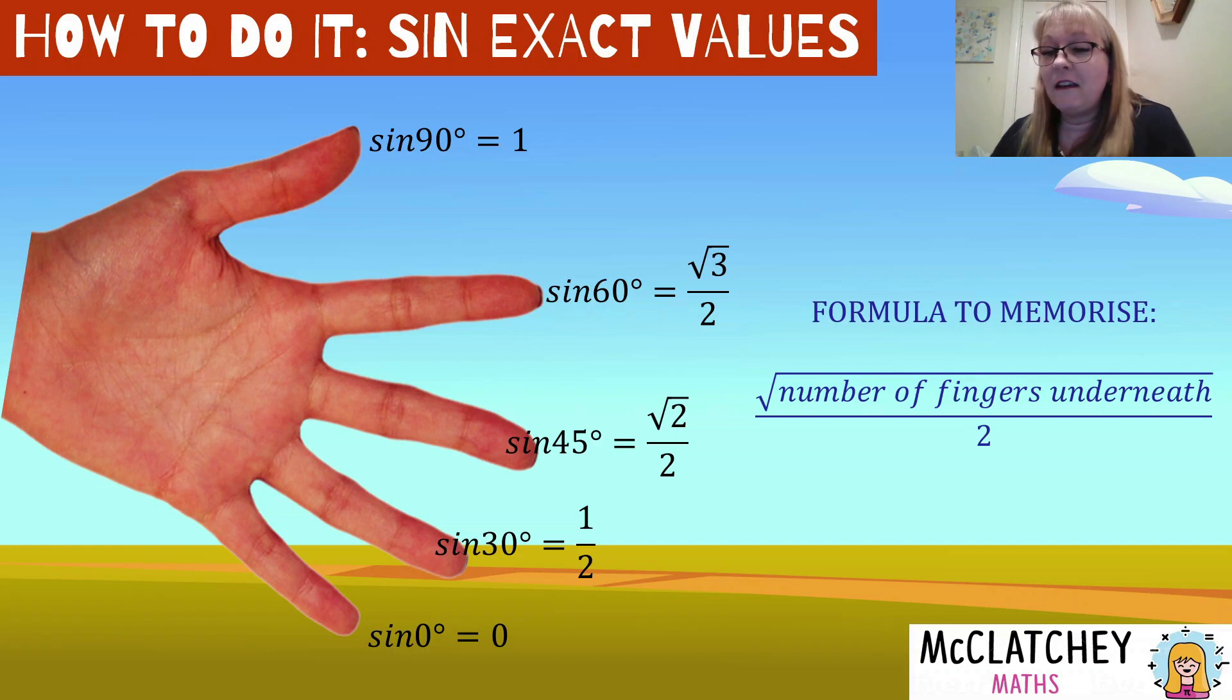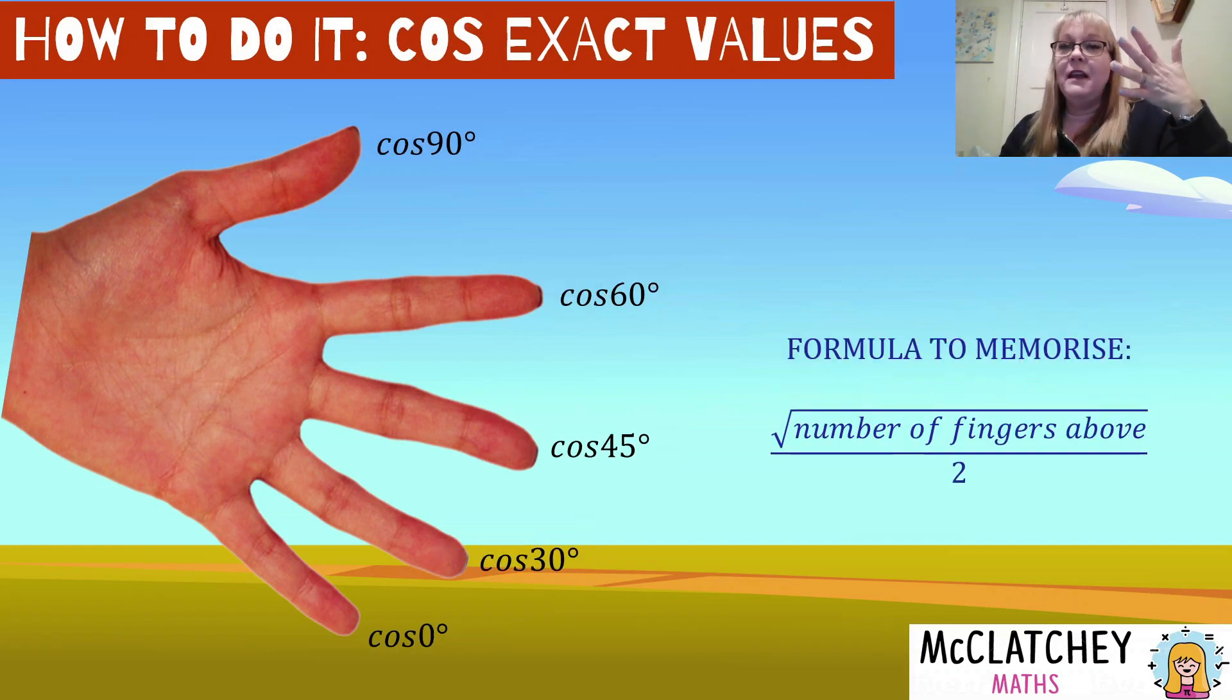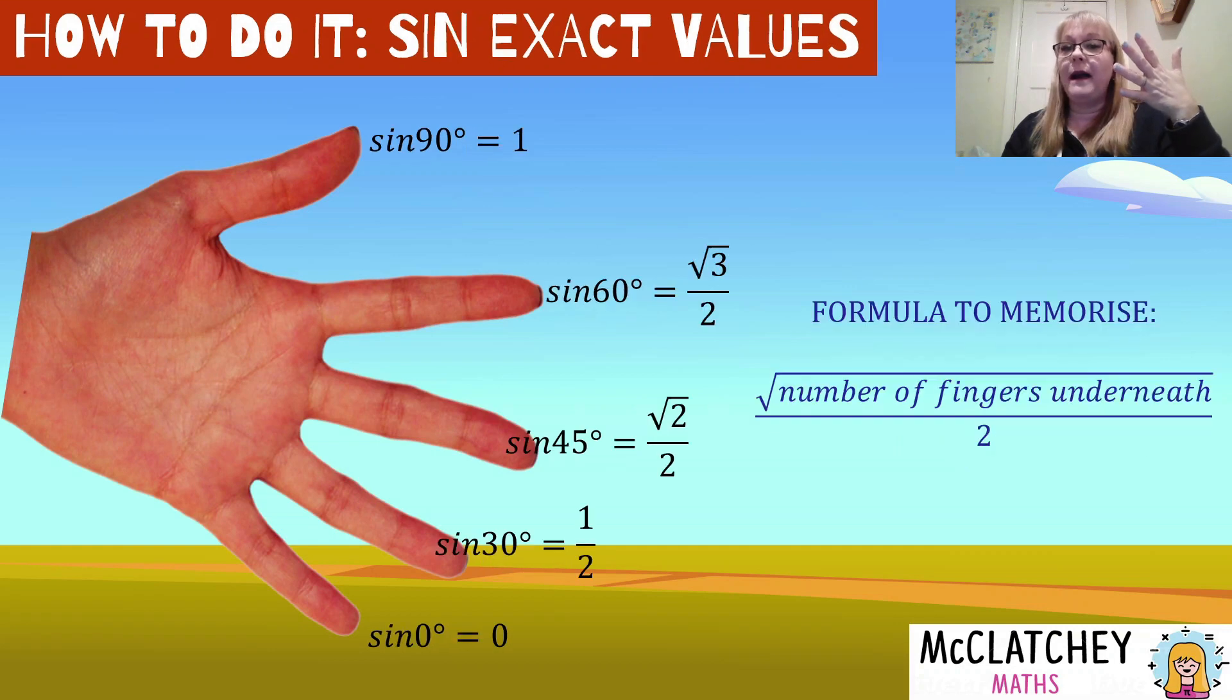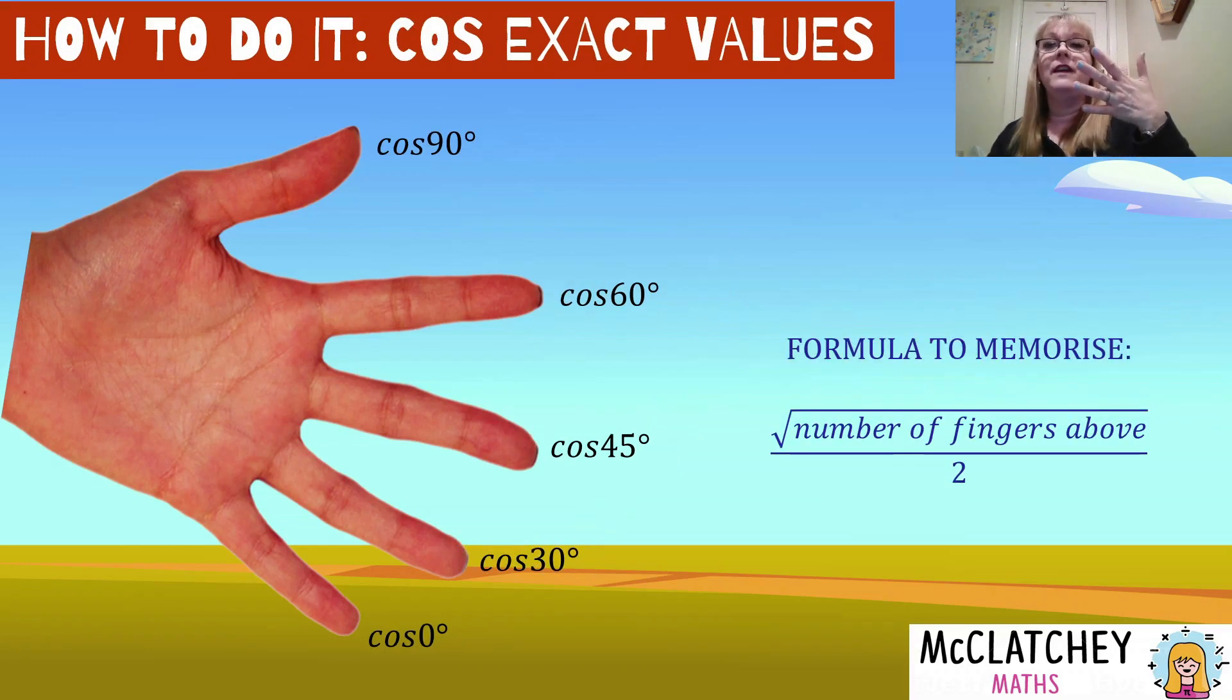Now to find cosine exact values, you keep the hand in exactly the same position, but the formula changes. It was the square root of the number of fingers underneath divided by two. This time, it's the square root of the number of fingers above the finger divided by two. Just remember, sine is underneath, cosine is above.